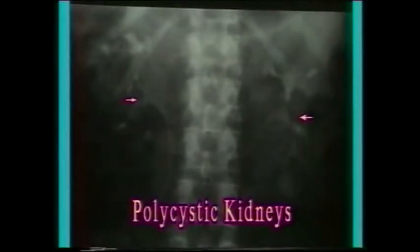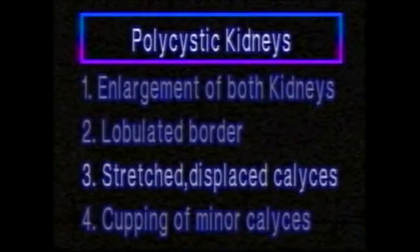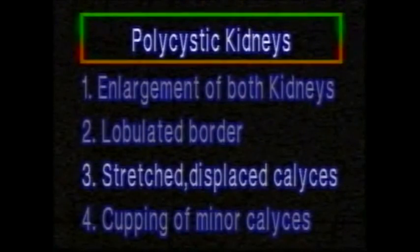The radiological features of polycystic kidneys are: enlargement of both kidneys, lobulated border, major calyces that are elongated, stretched and displaced giving a spider leg appearance, and minor calyces showing stretching and cupping.